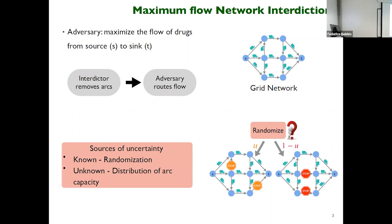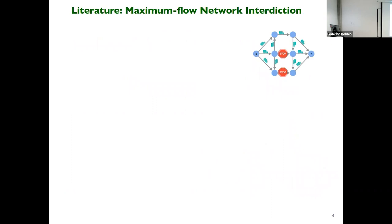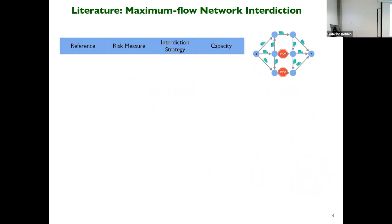Here we have two sources of uncertainty. One is a known source of uncertainty due to the randomization strategy. Another is an unknown source of uncertainty, which is due to the fact that the capacities of the arcs in the network are not known. Basically, from the data you cannot conclusively tell what is the distribution of the capacities, as you cannot know the congestion that will occur on a given day. These two sources of uncertainty have been handled in the literature under different assumptions on the model.